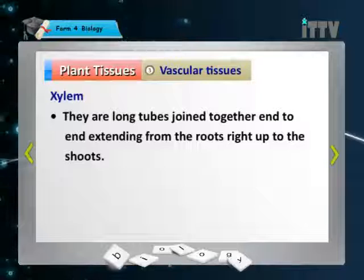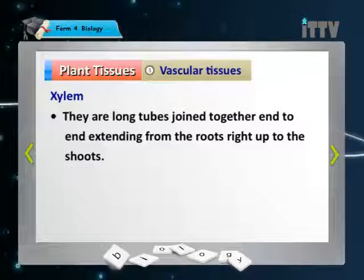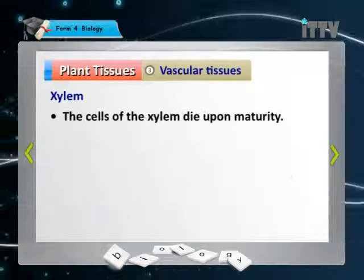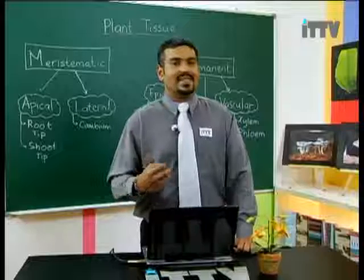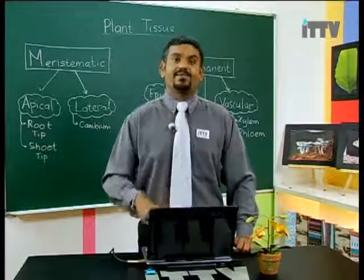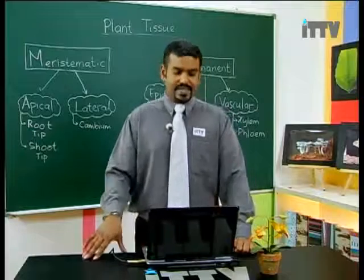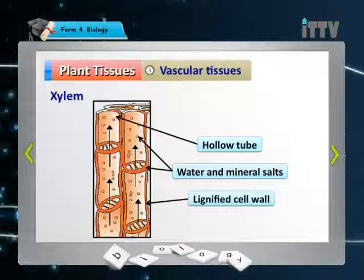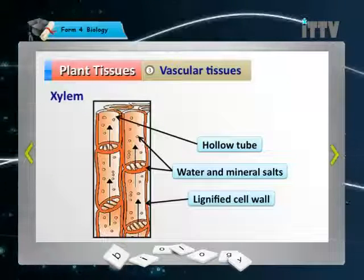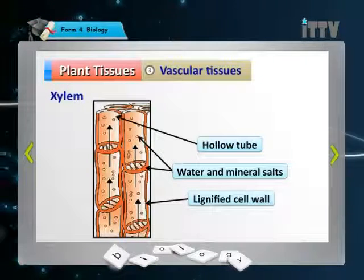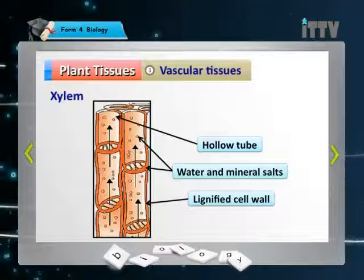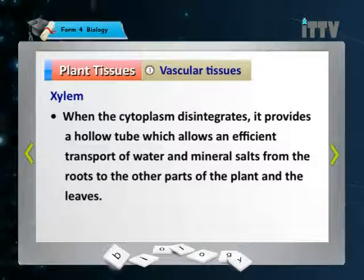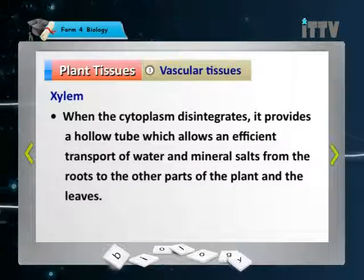The cell walls of xylem are thickened with lignin to provide support and mechanical strength to the plant. The cells of the xylem die upon maturity. The xylem hollow tube is the xylem vessel, which transports water and mineral salts from the root up to the leaf. When the cytoplasm disintegrates, it provides a hollow tube for efficient transfer of water and mineral salts from root to all parts of the plant.